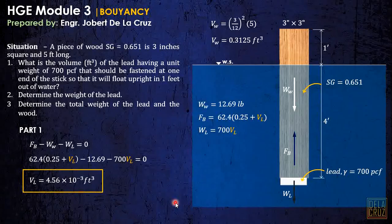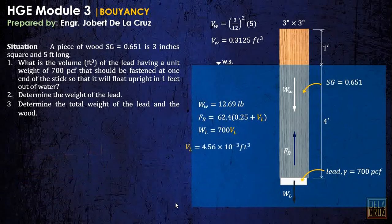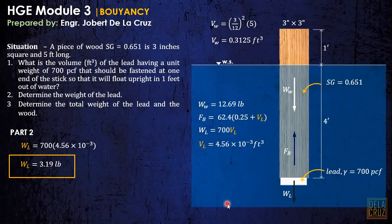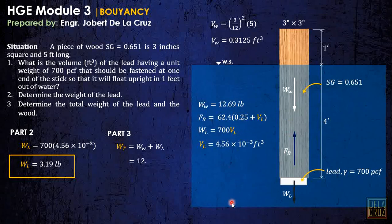For number 2 and number 3, it is straightforward. Determine the weight of the lid: weight is just gamma times volume — 700 times the volume we just calculated. For number 3, determine the total weight of the lid and the wood combined: simply add the weight of the wood and the weight of the lid and substitute.